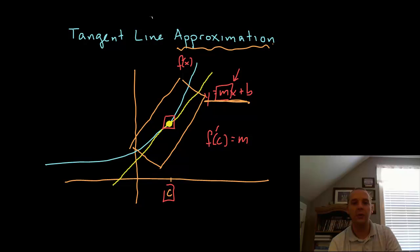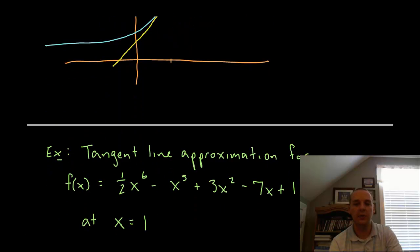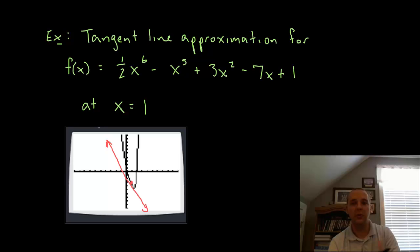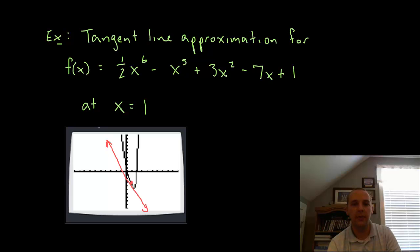So if we're okay with an approximation, we can use a tangent line to evaluate the function rather than the function itself. To get the equation of a tangent line we'll need two things: the slope of the tangent line and the y-intercept. Let's do this through an example. We have the function one-half x to the 6th minus x to the 5th plus 3x squared minus 7x plus 1, and we want to approximate that function around x equals 1. I graphed it on my TI and drew what the tangent line would look like at 1.